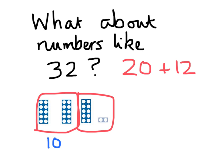10. What's half of 12? 6. So half of 32 is 10 and 6 which equals 16. And 16 and 16 makes 32. So that's our check to make sure we've got it right.